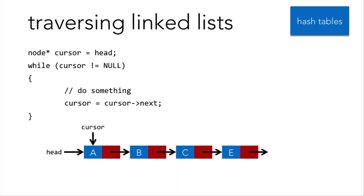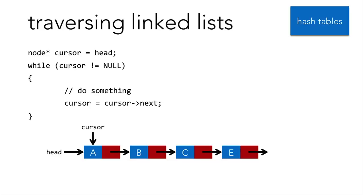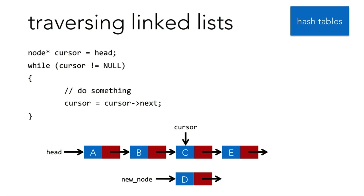But what if you want your list to be sorted? A sorted linked list might be easier to search later. For that, you'll need to know how to traverse linked lists. Use a node pointer as a cursor indicating which node you're at, starting at the first element. Loop until cursor is null, conduct processes, and advance the cursor using cursor->next. Remember, cursor->value is the same as (*cursor).value — dereferencing cursor and using the dot operator. Say you determine that D belongs between C and E: have the new node D point to E (cursor->next), then have C (the cursor) point to D. That way you maintain the list. Be careful not to lose links by moving cursor->next to D prematurely.